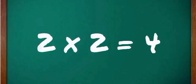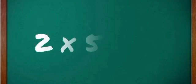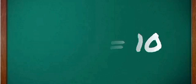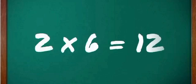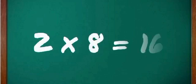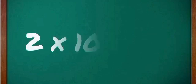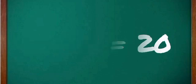2 one's are 2, 2 two's are 4, 2 three's are 6, 2 four's are 8, 2 five's are 10, 2 six's are 12, 2 seven's are 14, 2 eight's are 16, 2 nine's are 18, 2 ten's are 20. Okay, now 3.